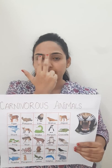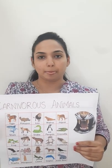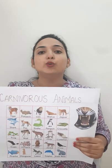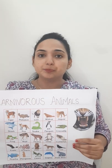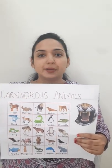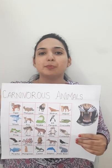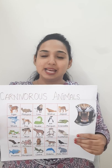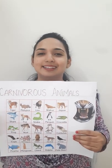Apart from their strong and powerful jaws, most carnivorous animals have their eyes located at the center of their head. This helps them in depth perception, which means they can determine the speed and the distance of their prey. These two special features make them unique from other animals and make them great hunters.